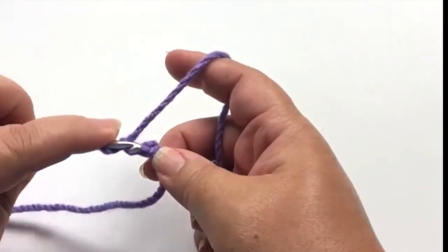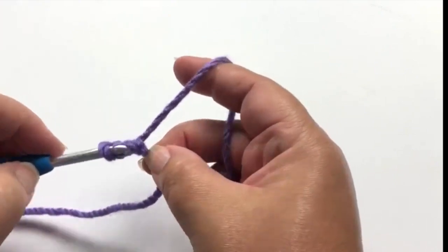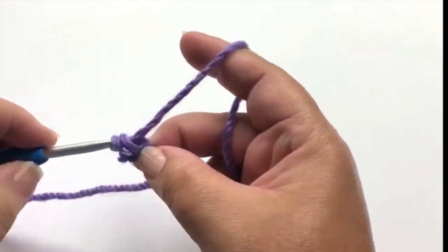Now work a single crochet in the first chain. Insert a hook, pull a loop through, yarn over and pull through both loops.